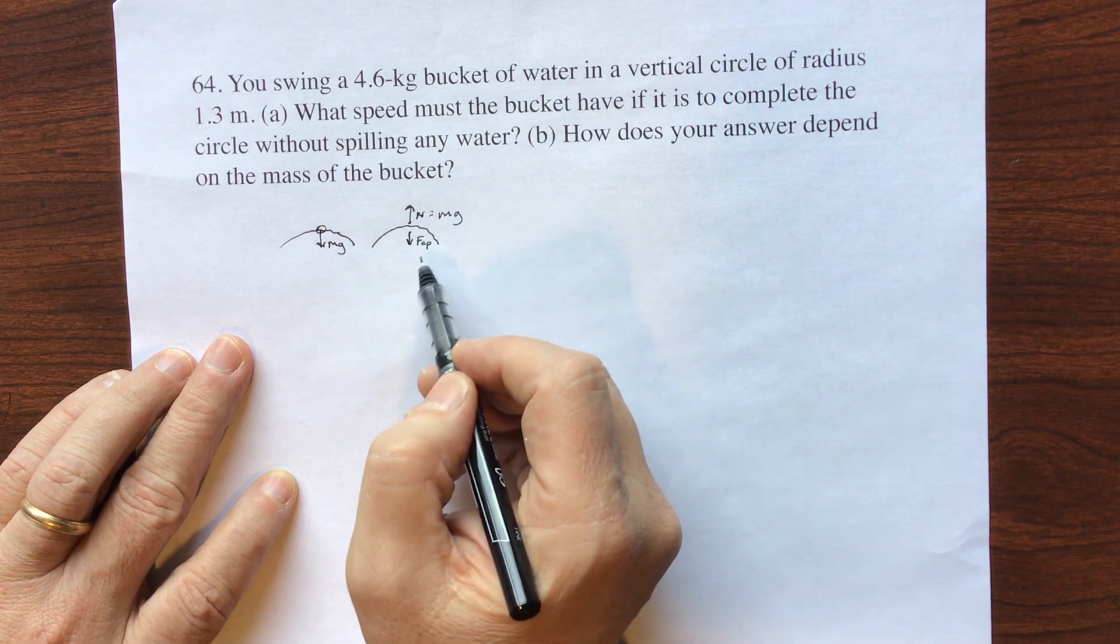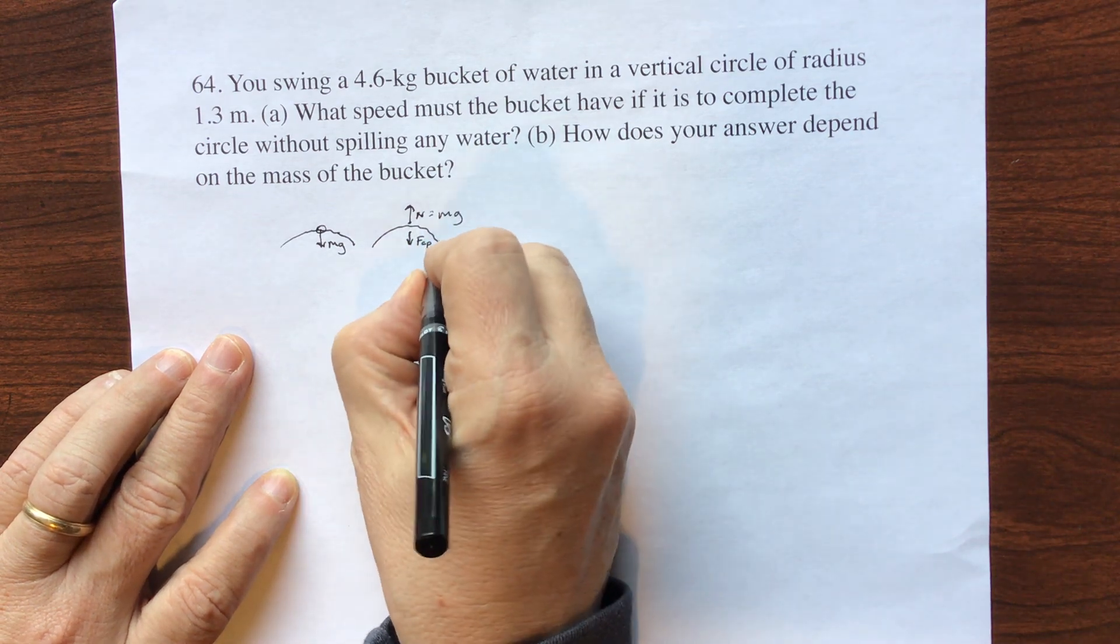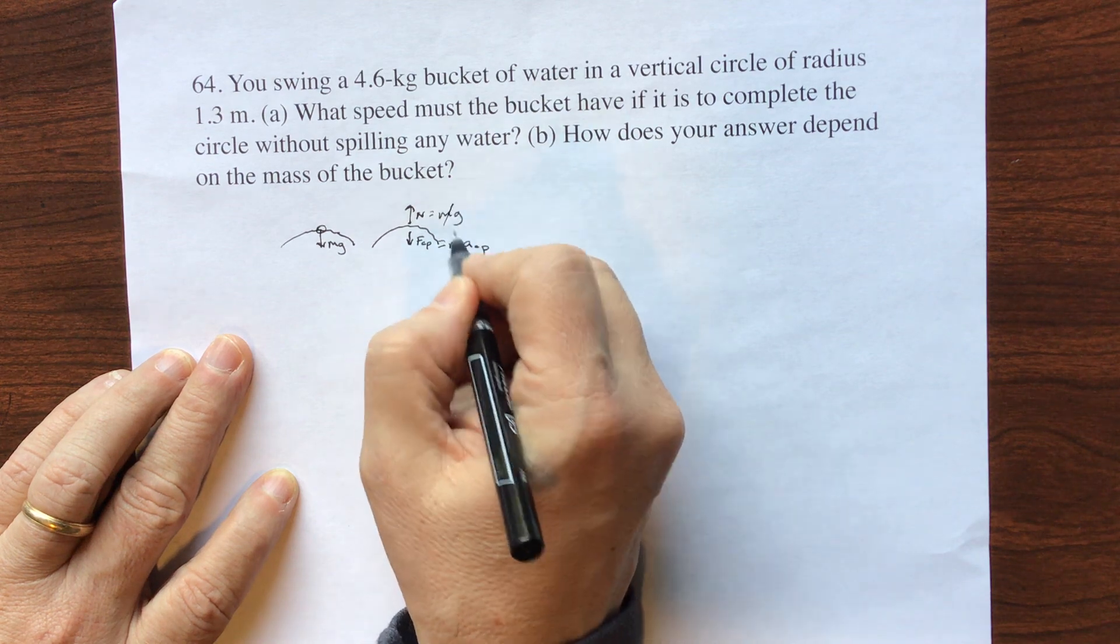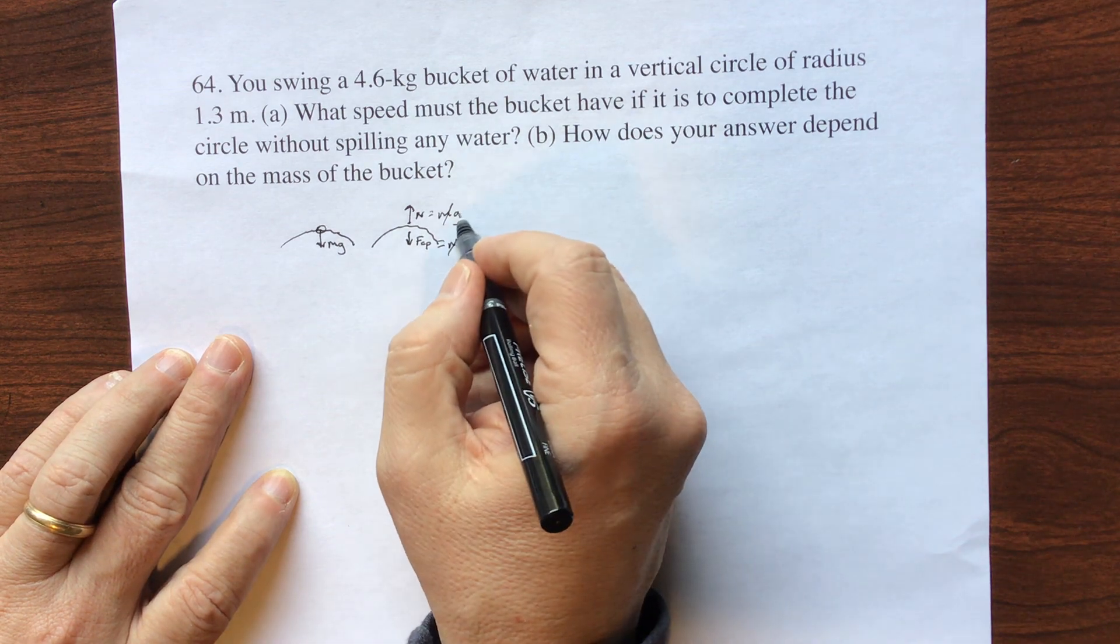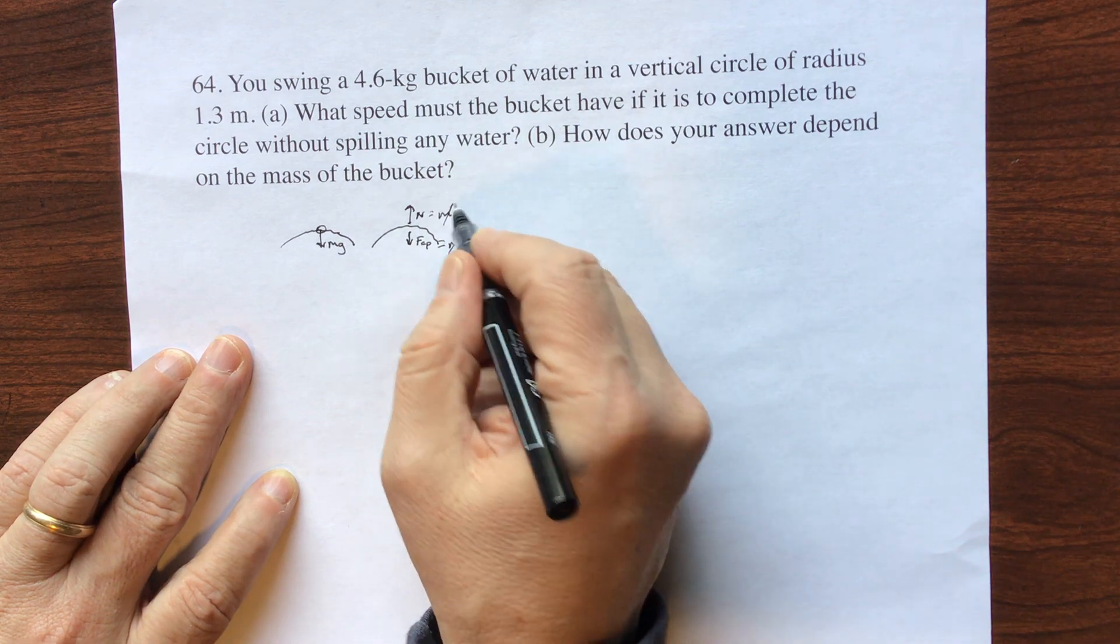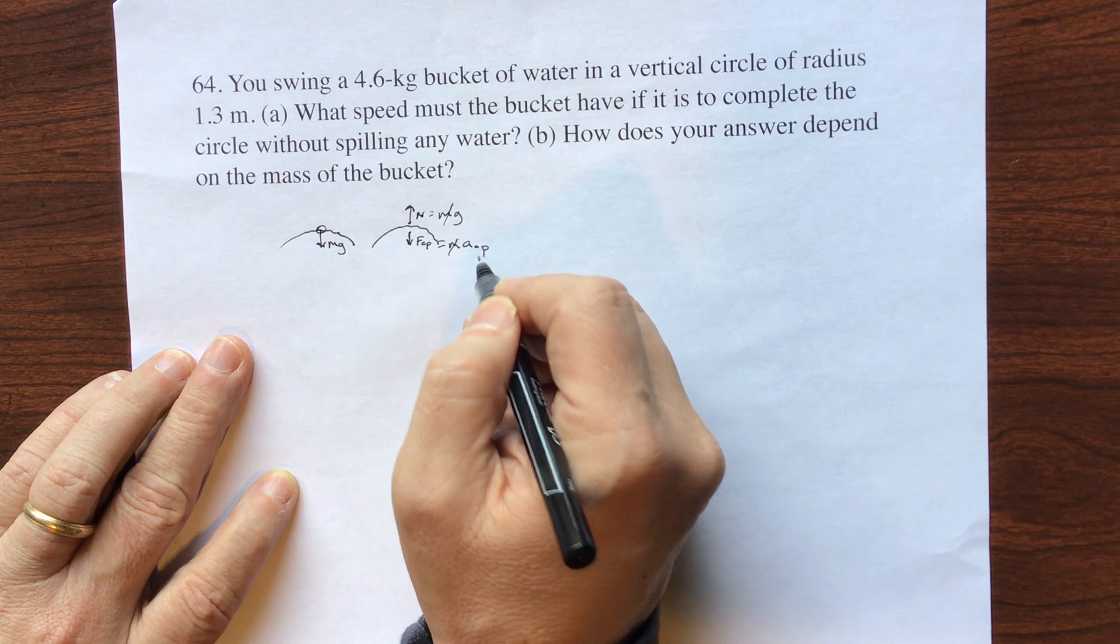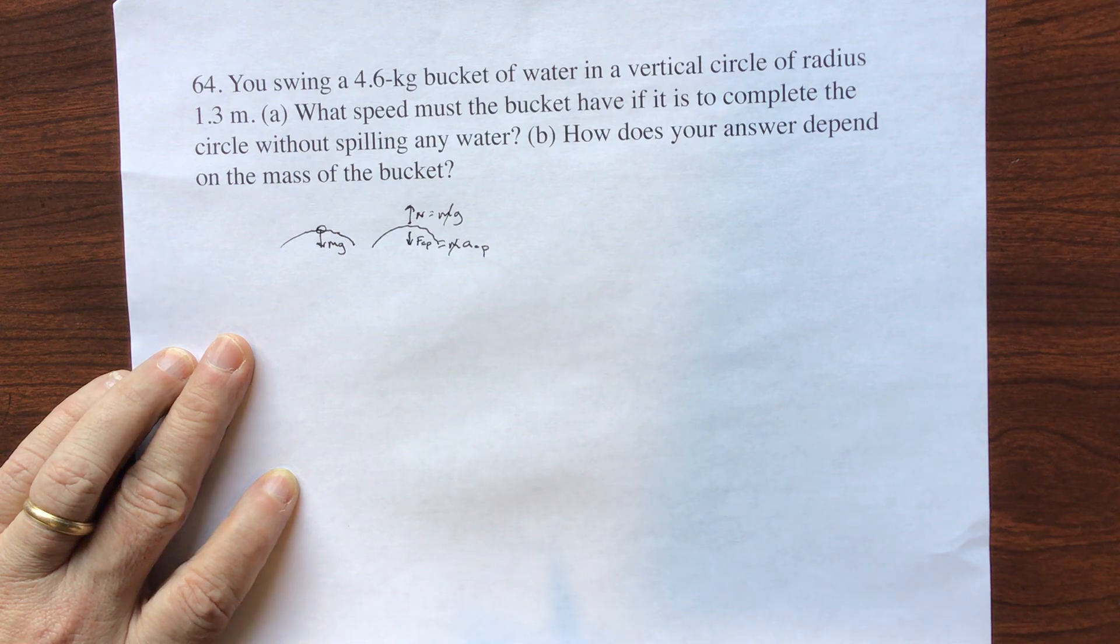So in the case of weightlessness, this is equal to m times centripetal acceleration. Well, that means that in the case of weightlessness, your gravity is equal to your centripetal acceleration. And then when it subtracts, it goes down to zero and you don't feel any force on the seat. That's what's happening.